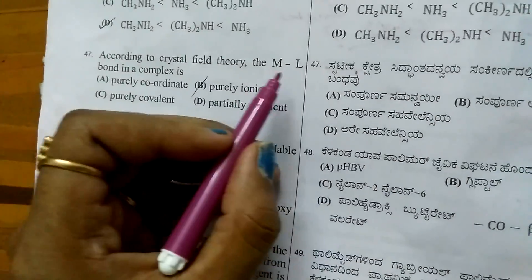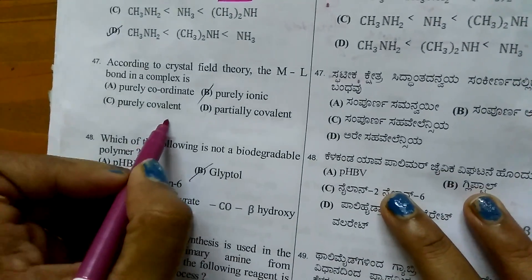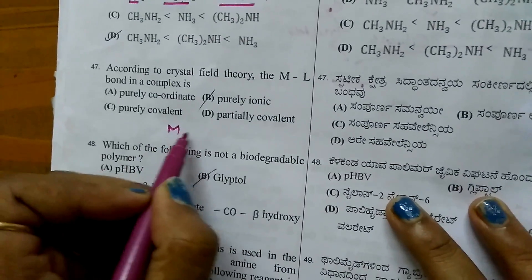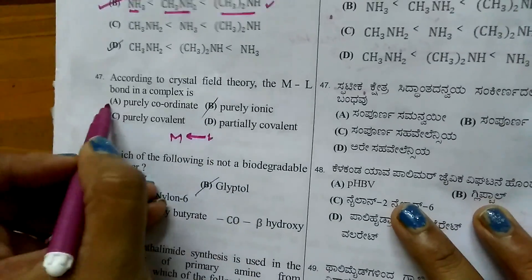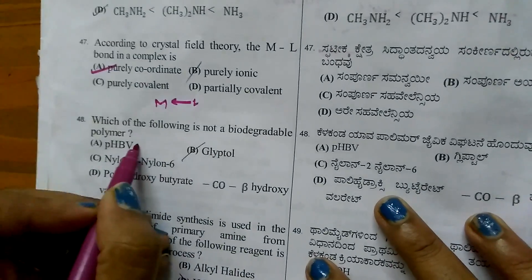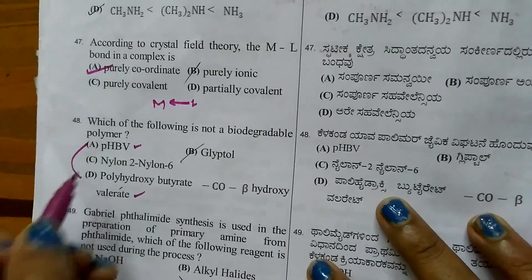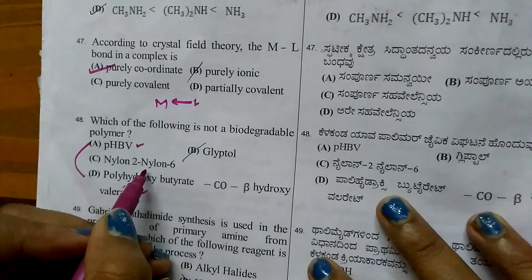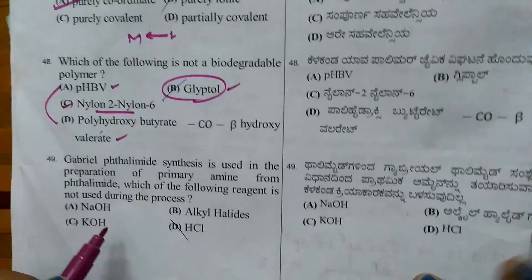Question 46: According to crystal field theory, the metal-ligand bond in a complex - ligands donate electron pairs to metal, forming coordinate bonds. Question 47: Which is not biodegradable? PHBV (polyhydroxybutyrate-co-beta-hydroxyvalerate) and nylon 2-nylon 6 are biodegradable. The answer is non-biodegradable glyptal.